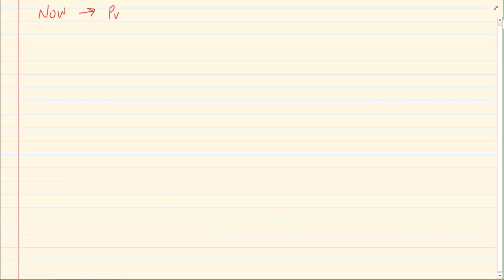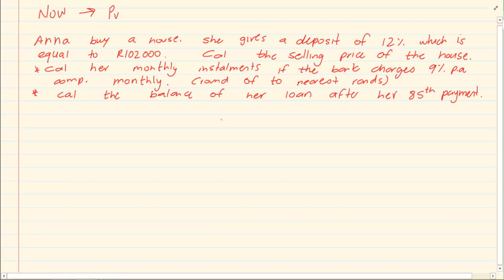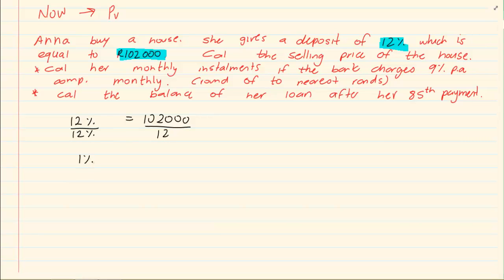If I give you a basic question, the reason I am doing this question is because I want to show you how do you calculate balance of a loan. If they say that Anna wants to buy a house, she gives a deposit of 12% which is equal to 102,000. Now, 12% is equal to 102,000. What would 1% equal to? So, 1% would equal to 8,500.